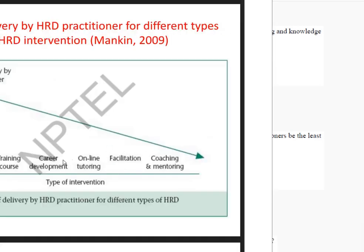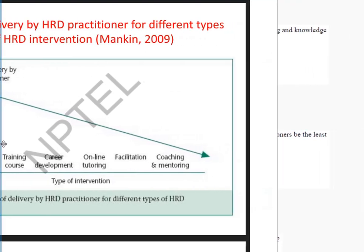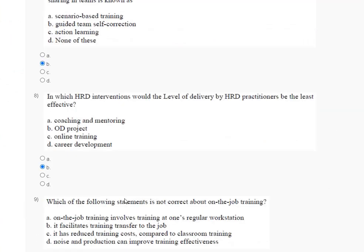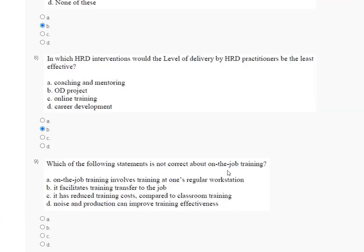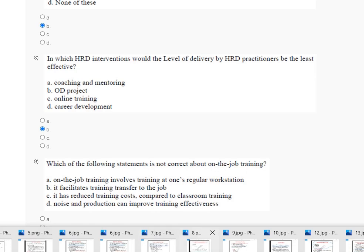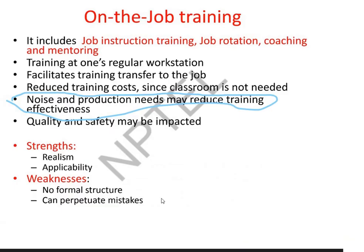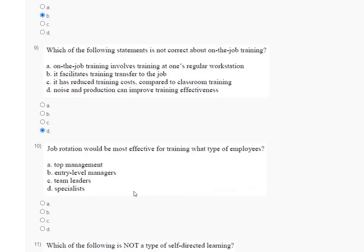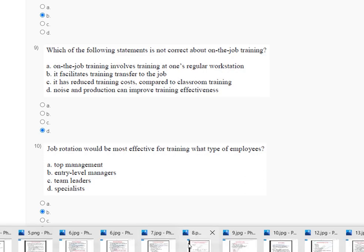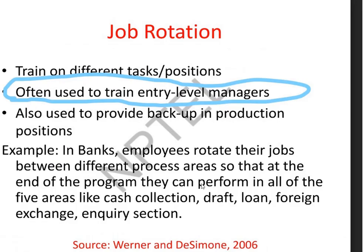Question number 9: which of the following statements is not correct about on-the-job training? The correct answer is Option D — noise and production can improve training effectiveness. The explanation of question number 9 is here. Question number 10: job rotation would be most effective for training what type of employees? The correct answer is Option B — entry-level managers. The explanation of question number 10 is here.